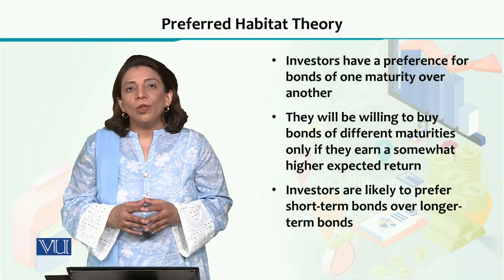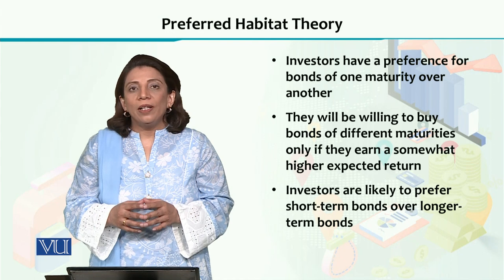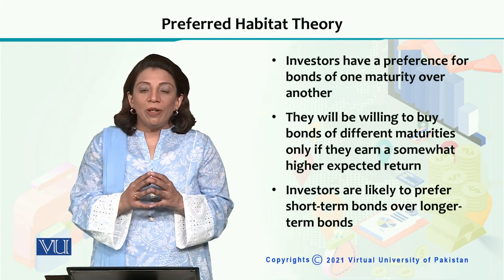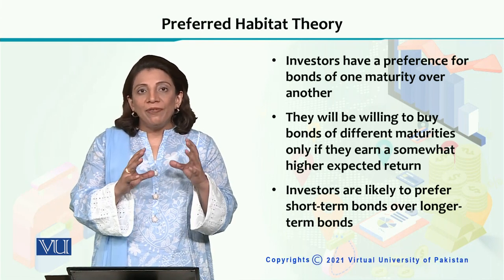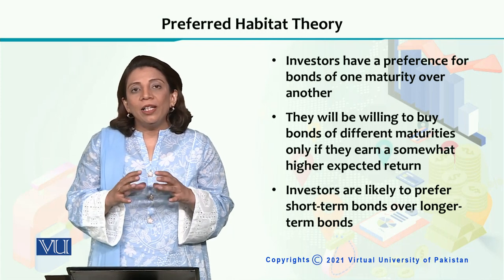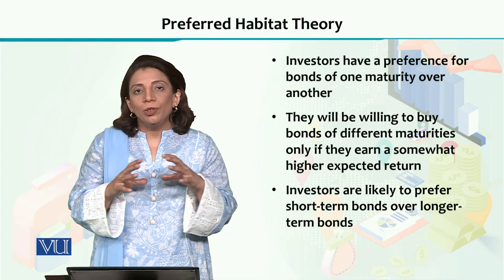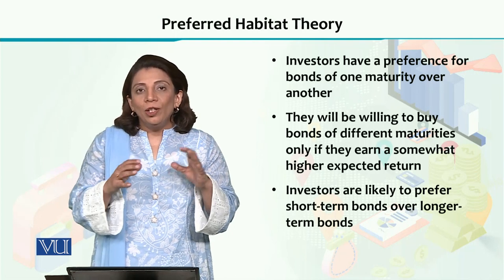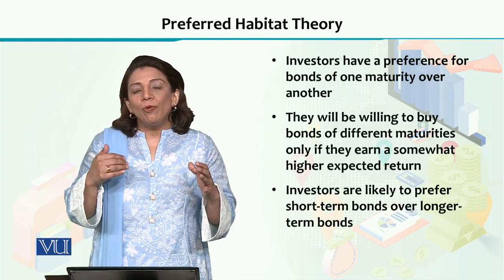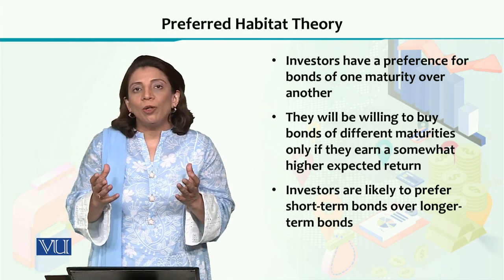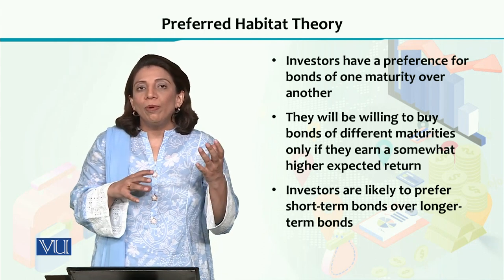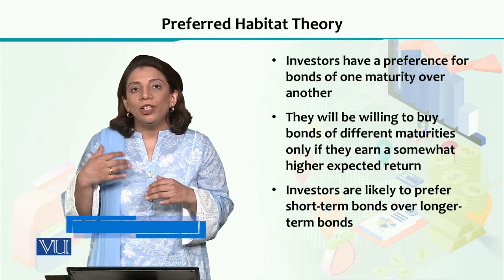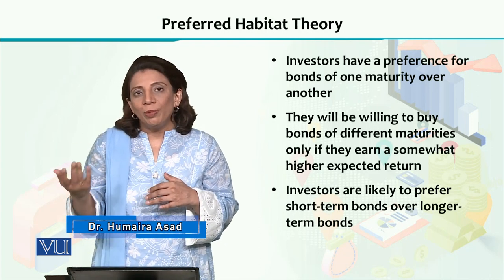In this section, we are going to talk about the preferred habitat theory. It has been observed that investors have a certain preference for a bond of a specific maturity. We can categorize buyers of bonds into different categories: there are certain people who prefer to invest in medium-term opportunities, certain people who prefer short-term bonds, and certain people who prefer long-term bonds.